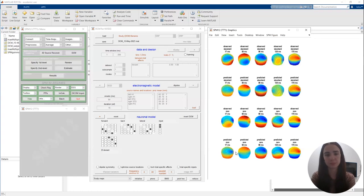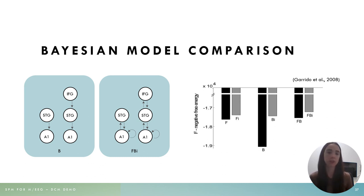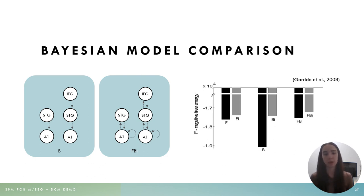One powerful thing we can do with DCM is run many different models and then use Bayesian model comparison to identify the one that does the best job at explaining our data. This is what Garrido and colleagues did in 2008 — running a model with modulation of backward connections only, as well as a more complex model with modulation of both forward, backward, and self-connections. You can try many different configurations based on your hypotheses and then use Bayesian model comparison to identify the best one. The negative free energy for each model shows that the forward, backward, and intrinsic connection model outperforms the backward-only model.